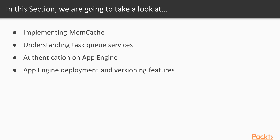We'll then examine a typical user authentication implementation on App Engine to secure our new web app. And finally, we'll see how App Engine's deployment utilities work and how our development and production flows can leverage the versioning features provided. Let's get started with our new app.